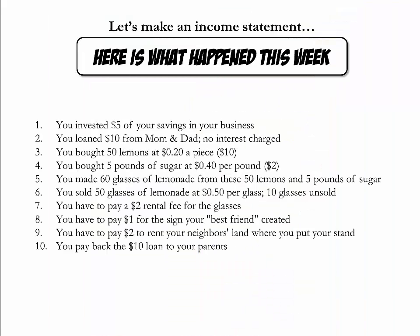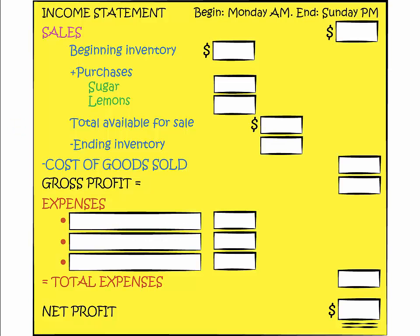Here is an overview of everything that happened in week one. Let's go over these items one by one and see whether they are relevant to the income statement and how they affect it. The first item is your $5 investment in your business. Our original investment of $5 does not belong in the income statement because it did not affect our earnings — it belongs on the balance sheet.